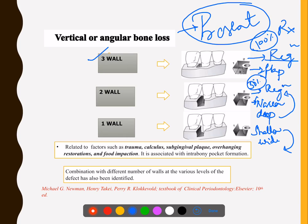In a one-wall defect, your room is left with only one wall. The treatment is to remove that remaining wall as well and make a flat, even line. That is the treatment for a one-wall defect — resective surgery — and that is how you associate vertical bony defects with their treatment.